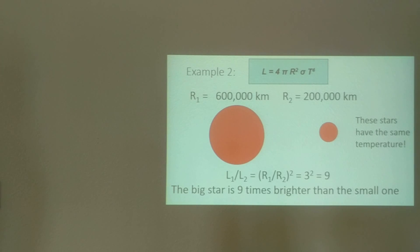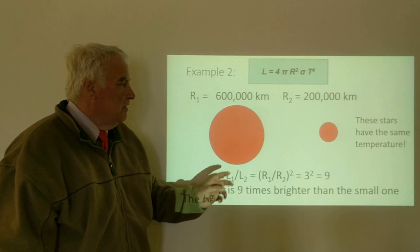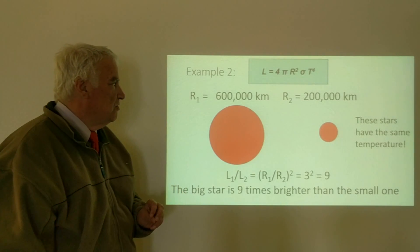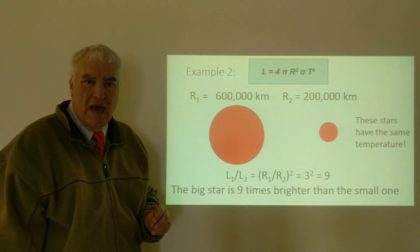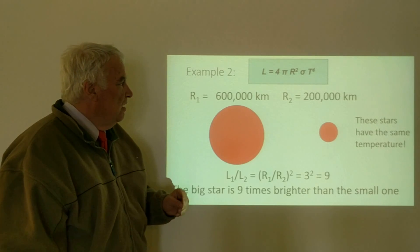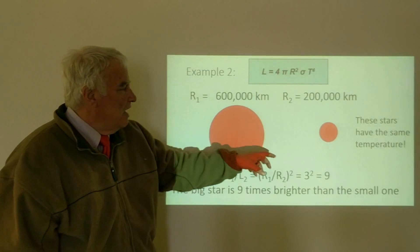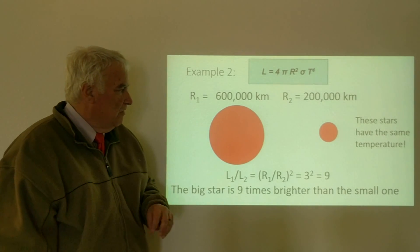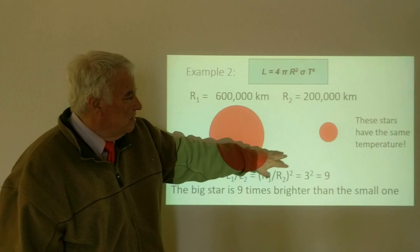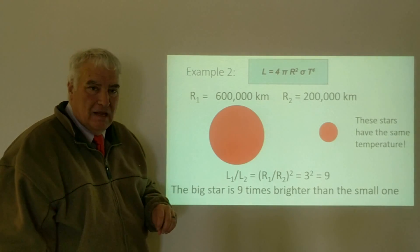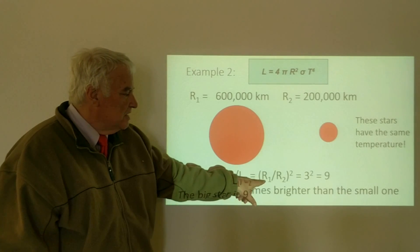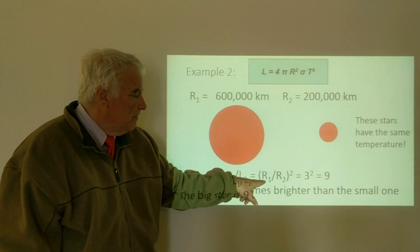Another example: if we have two stars that have the same temperature—here they both have the same temperature as the red one in the previous example, 4,000 degrees—but the temperature doesn't matter here because they're the same. But this one is 3 times the radius of that one. That means there's more surface emitting the light at the same temperature, so this one will be brighter.